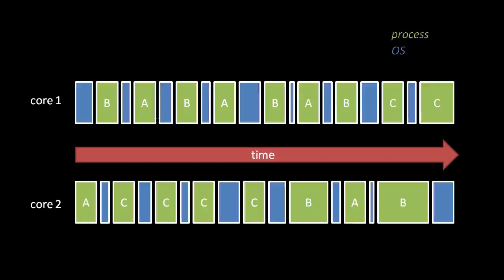What's happening here is that a portion of the OS called the scheduler runs after each process to decide what OS work, if any, should be done, and which process should run next. The question, then, is how does the currently running process get interrupted?